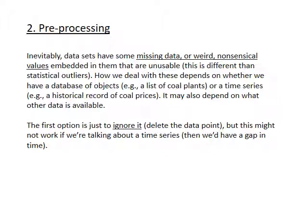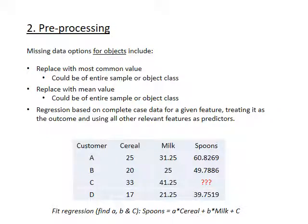If you have a time series of annual natural gas prices and one year is missing, a gap in that record would be problematic — for example, if you were using it as part of some simulation model, you would need a value there, otherwise your program might fail. For missing time series data, we need options beyond just ignoring it. For object data — not a time series but more of a catalog of different things — we have several options.